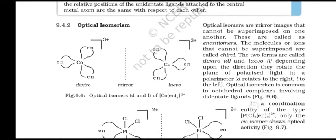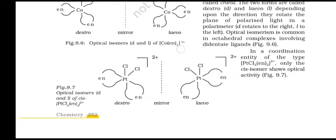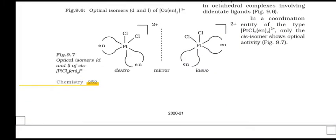Optical Isomerism: Optical isomers are mirror images that cannot be superimposed on one another — these are called enantiomers. Molecules or ions that cannot be superimposed are called chiral. The two forms are called dextro (d) and levo (l), depending on the direction they rotate plane-polarized light in a polarimeter: d rotates to the right, l rotates to the left. Optical isomerism is common in octahedral complexes involving didentate ligands. In a coordination entity of type [Pt(Cl)2(en)]2+, only the cis isomer shows optical activity.